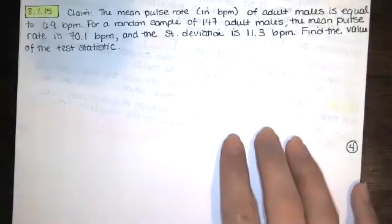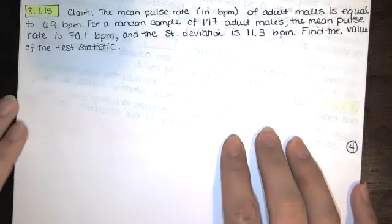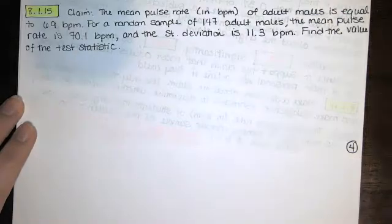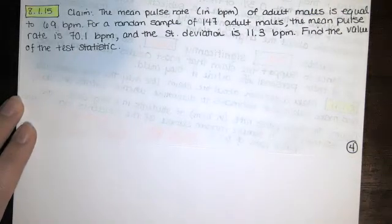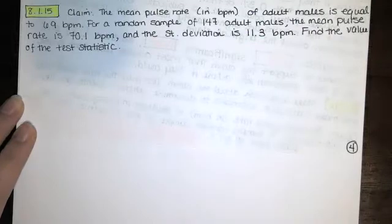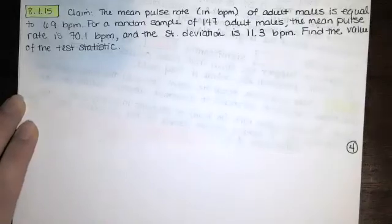In this video, we solve problem 8.1.15 from Essentials of Statistics, 6th edition by Mario Triola. We're given a claim. The claim says that the mean pulse rate in beats per minute of adult males is equal to 69 beats per minute. And then we're told that for a random sample of 147 adults, the mean pulse rate is 70.1 beats per minute, and the standard deviation is 11.3 beats per minute. We're asked to find the value of the test statistic.